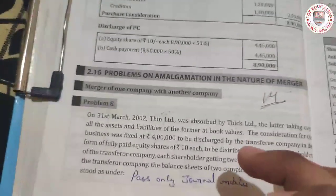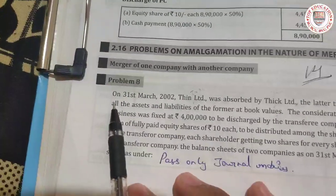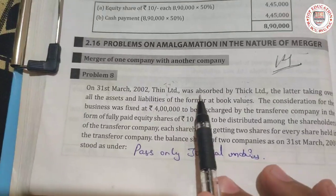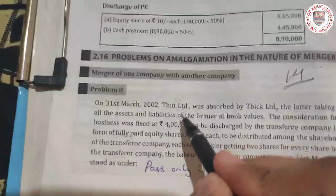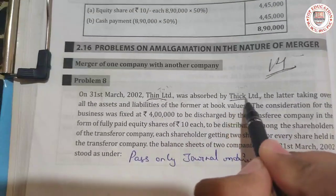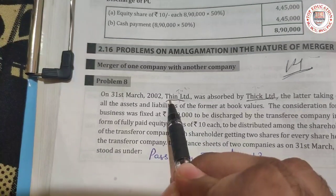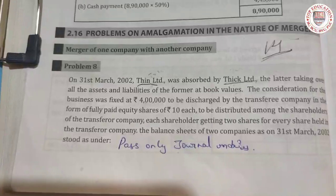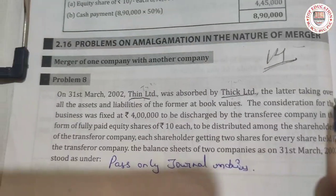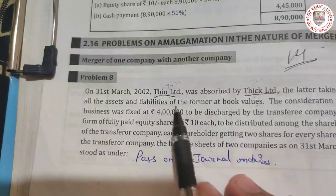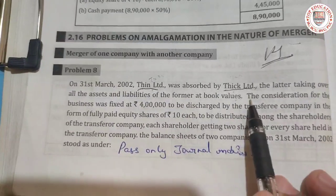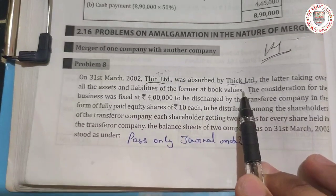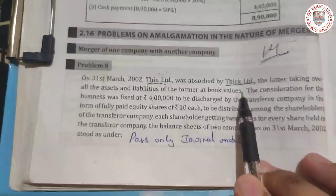Let's begin with the question. On 31st March 2002, Thin Limited was absorbed by Thick Limited. Thin Limited is the existing company and Thick Limited is the new company taking it over. Thick Limited took over all the assets and liabilities at book values — so the balance sheet amounts remain the same.